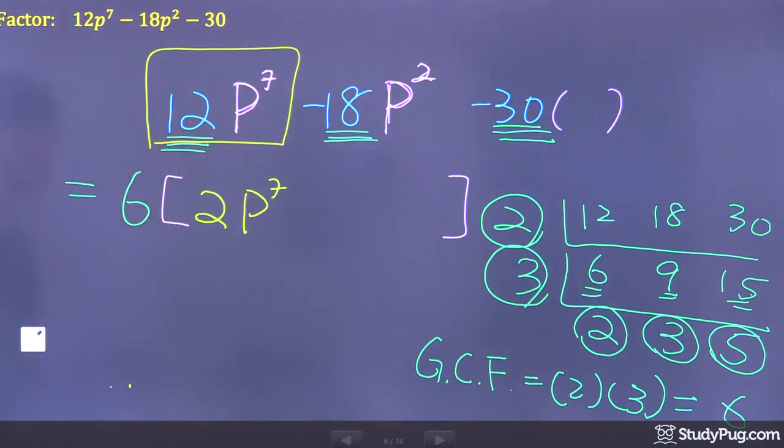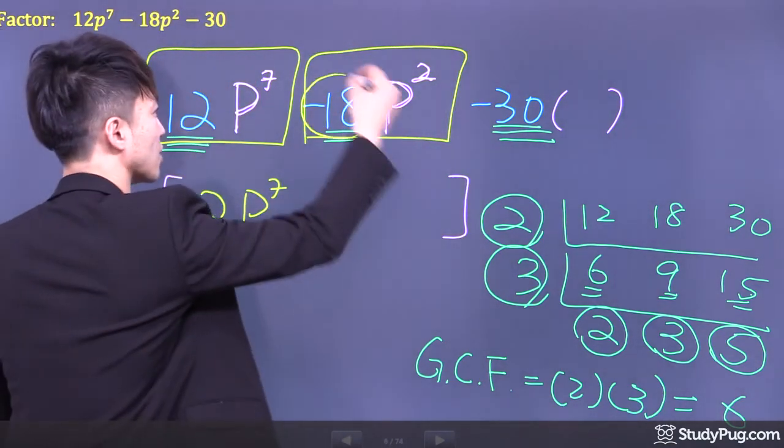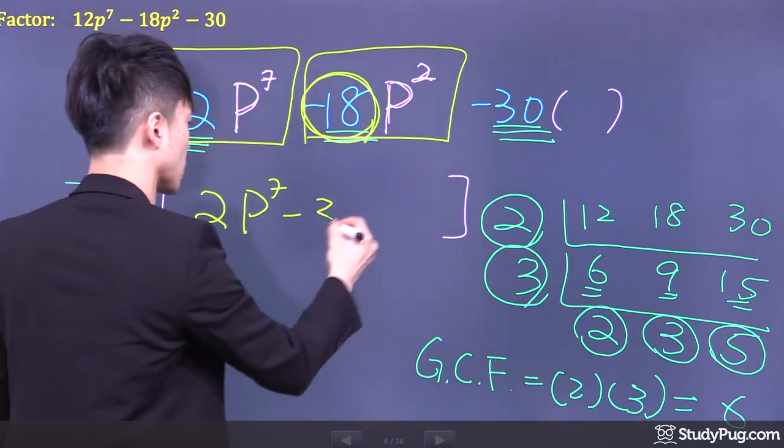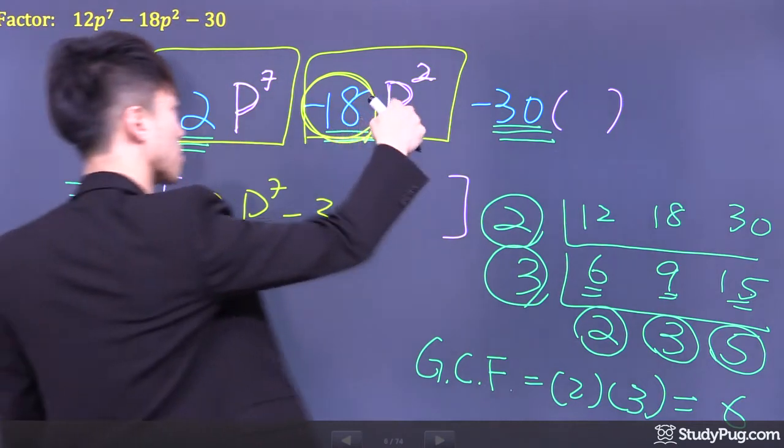Now how about the second term? For the second term, negative 18 divided by 6, we have negative 3. And once again, p will stay.